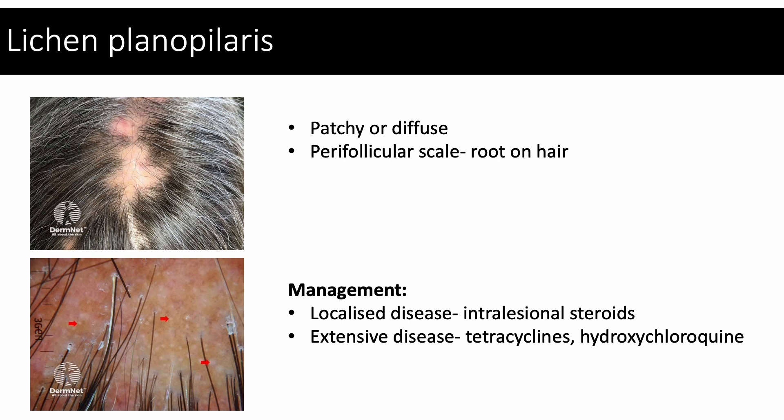Lichen planopilaris can result in patchy or diffuse scarring alopecia. Characteristically, it presents as perifollicular scale noted at the root of the hair. It is important to thoroughly examine patients to look for signs of lichen planus affecting other areas of the body. Localised disease can be managed with intralesional steroids, and for extensive cases, tetracyclines or hydroxychloroquine can be tried.